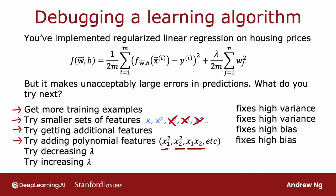And then decreasing lambda means to use a lower value for the regularization parameter. And that means we're going to pay less attention to this term and pay more attention to this term to try to do better on the training set. And again, that helps you to fix a high bias problem.